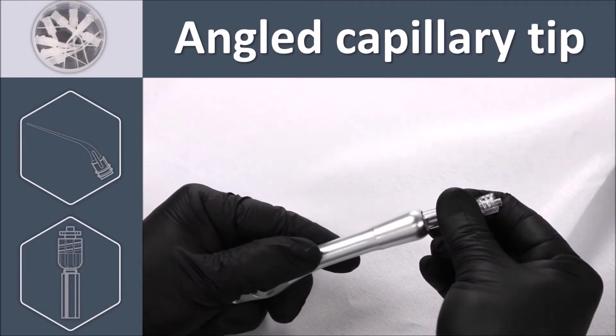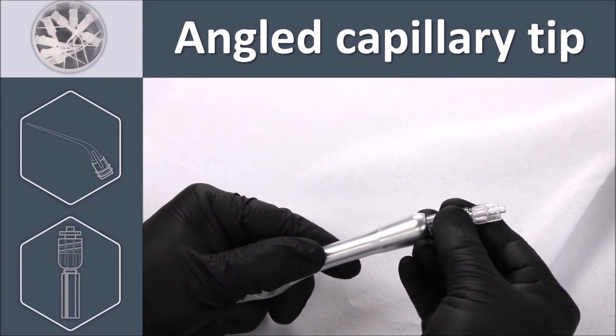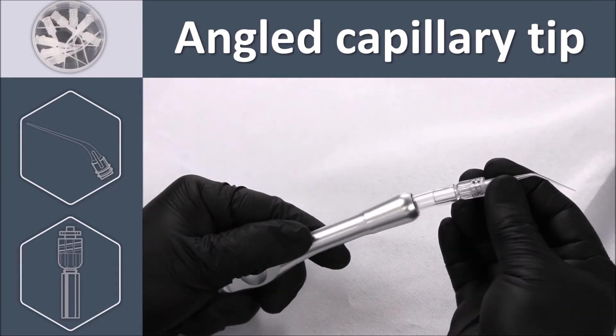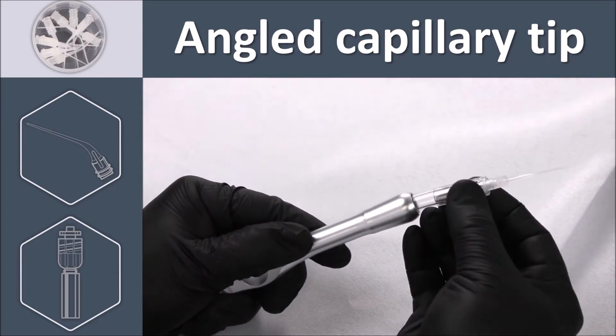For additional suction at the pulp chamber level, install the high-vac adapter on the high-vac terminal. Connect the capillary tip to the high-vac adapter.